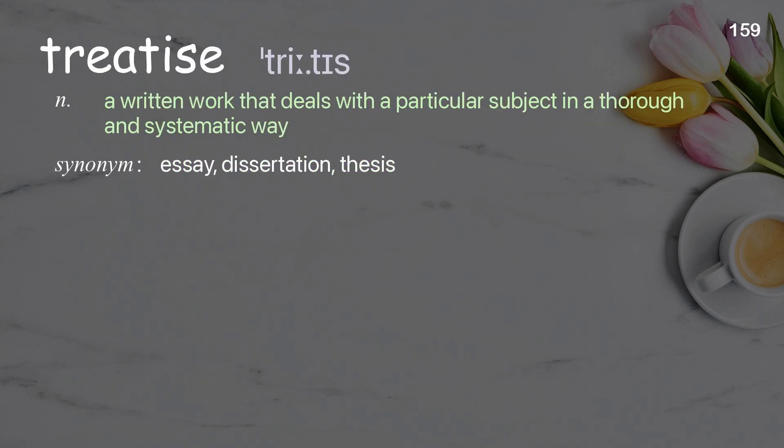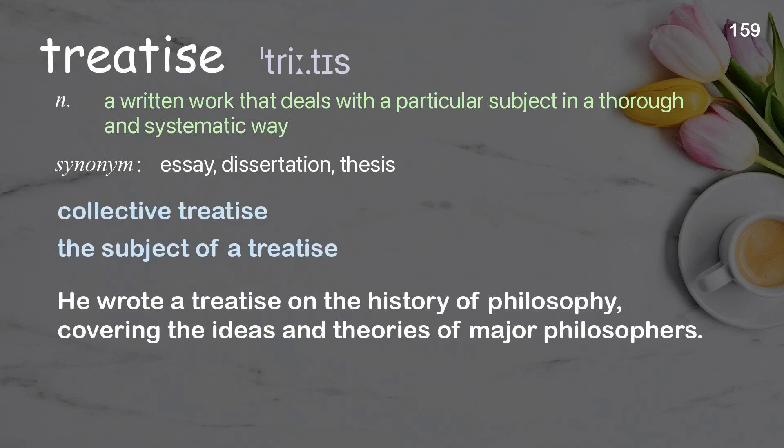Treatise: A written work that deals with a particular subject in a thorough and systematic way. Examples: collective treatise, the subject of a treatise. He wrote a treatise on the history of philosophy, covering the ideas and theories of major philosophers.